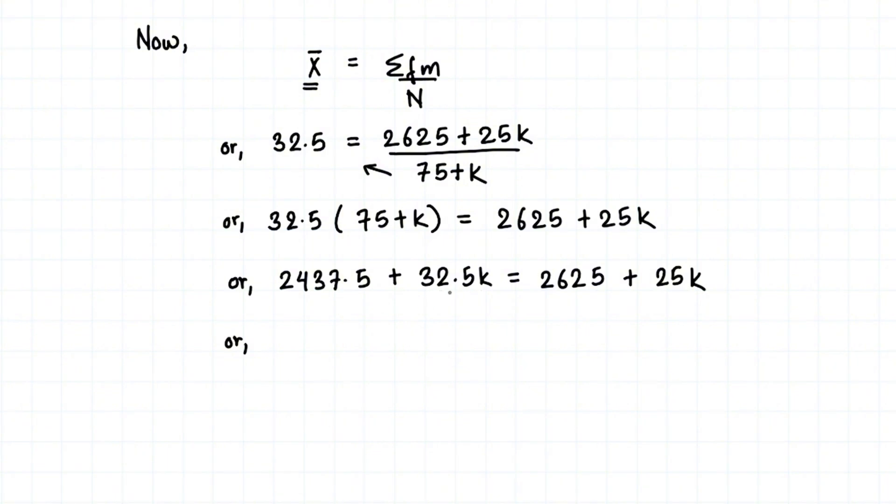Now let's put the k terms together. Let's move that 25k to the left side. We get 32.5k minus 25k equals 2625. When 2437.5 moves to the right side, it becomes 2625 minus 2437.5.